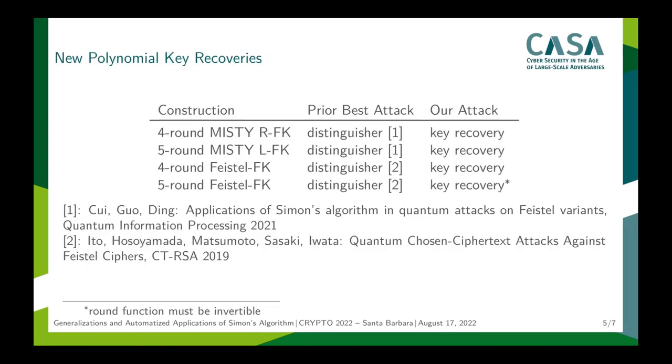Using our automatic search, we found even more attacks, most importantly, on two MISTY constructions and the four-round Feistel-FK construction without the restriction that the internal round function must be a permutation. These constructions were studied before, but only distinguishers, similar to the original one against three-round Feistel by Kuwakado and Morii, were found. With these, key recovery is still possible using the Grover-Meet-Simon idea. However, then a polynomial amount of quantum queries is not enough anymore. In contrast to that, our attacks directly rely on Simon's algorithm to recover the keys with only a polynomial number of quantum queries.